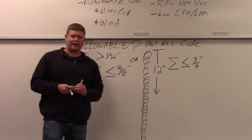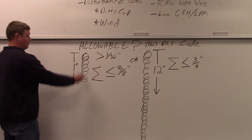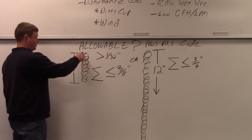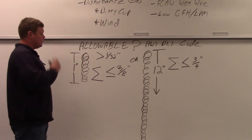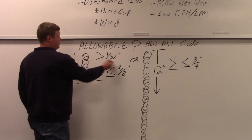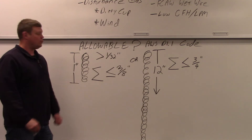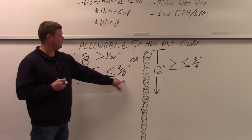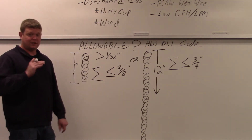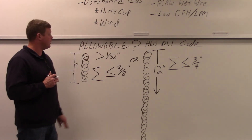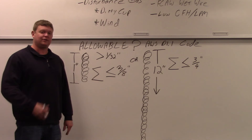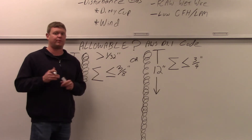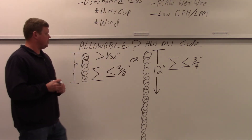So what does that mean? In a one-inch section of weld, porosity must be greater than 1/32nd of an inch to count. If you add up all the holes in that inch, the sum must be less than or equal to 3/8ths of an inch — otherwise it's rejectable, according to AWS D1.1.